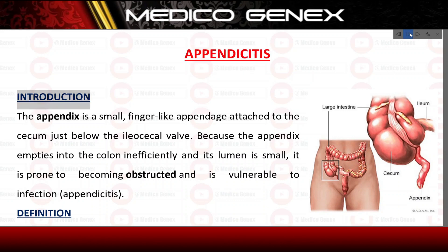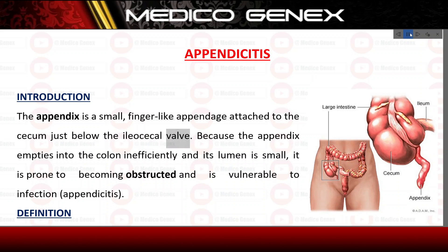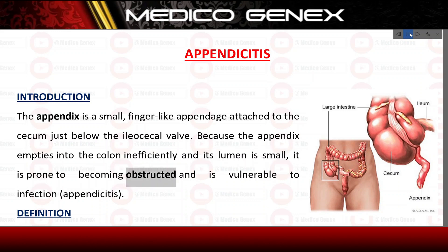Appendicitis. Introduction. The appendix is a small, finger-like appendage attached to the cecum just below the ileocecal valve. Because the appendix empties into the colon inefficiently and its lumen is small, it is prone to becoming obstructed and is vulnerable to infection — appendicitis.